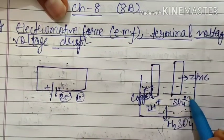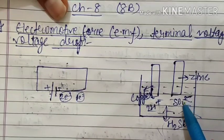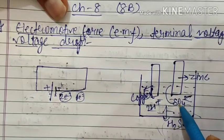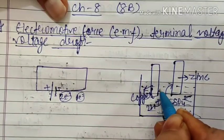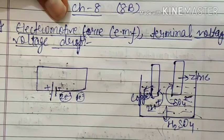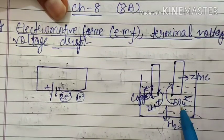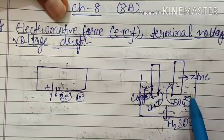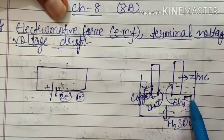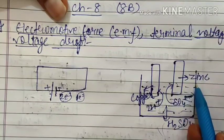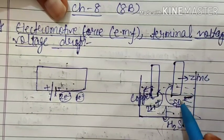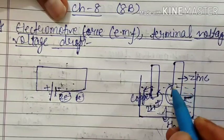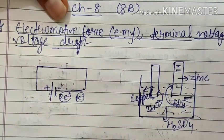The SO₄²⁻ ion carries a negative charge and will go to the zinc plate. When it reaches the zinc plate, it tries to neutralize its negative charge by donating its excess electrons to the zinc plate, becoming neutral. So when SO₄²⁻ goes to the zinc plate, it deposits negative charge onto it.